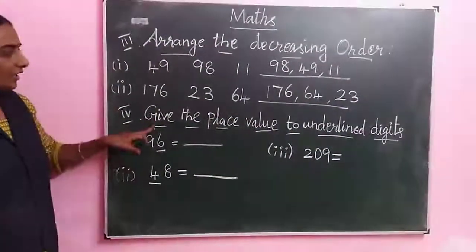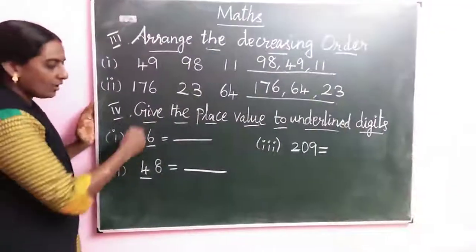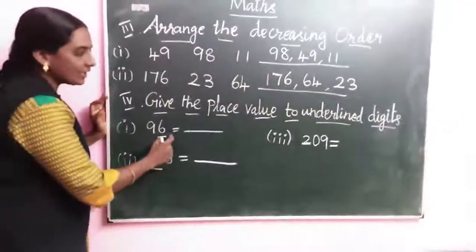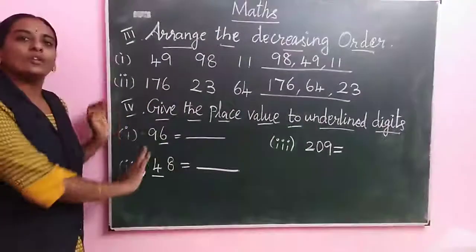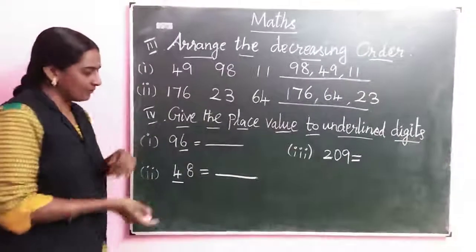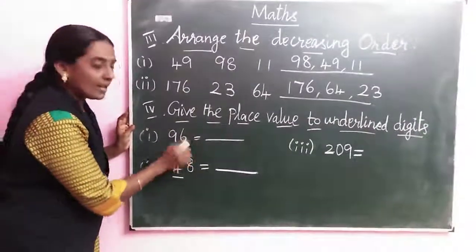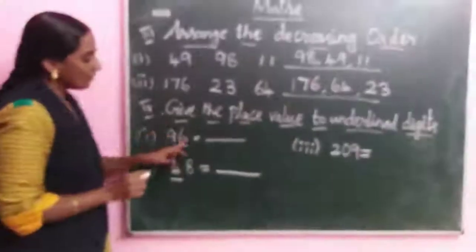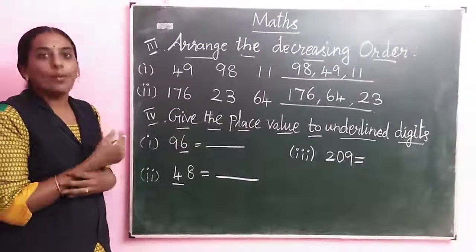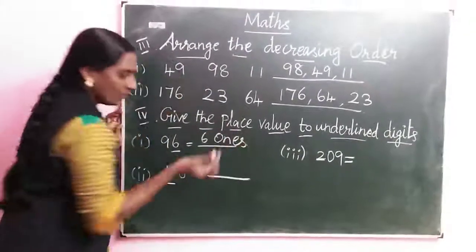Next one, give the place value to the underlined digit. Now we are doing some numbers. First question is 96. What number? 96. How many numbers are underlined? 6. So first, starting place is ones. So 6 ones.